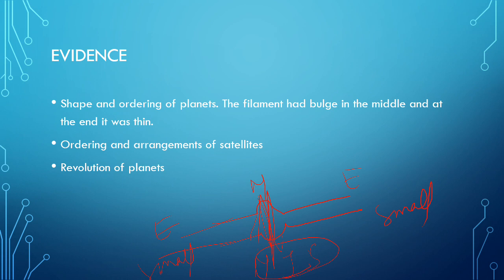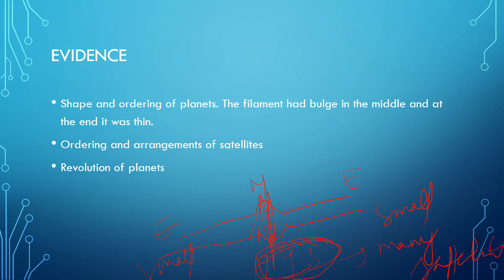Regarding the arrangement of satellites: bigger planets remained in gaseous form for longer time in space because their cooling took longer due to their large size. Smaller planets cooled and condensed within a very short period because of their small size. A larger number of satellites formed from bigger planets, so large planets have many satellites while smaller planets have very few. The revolution and inclination of planet axes also supports this theory.